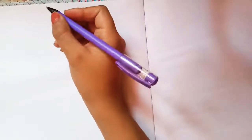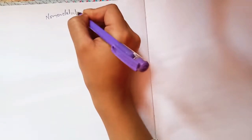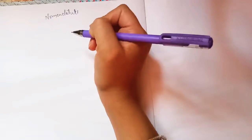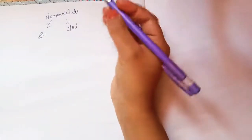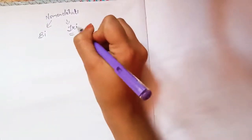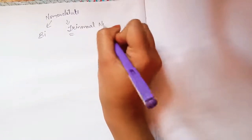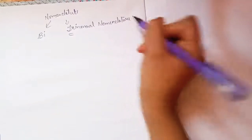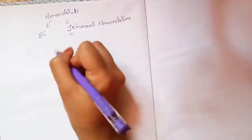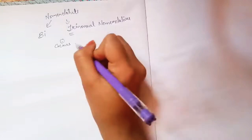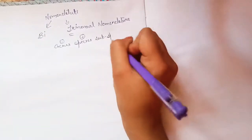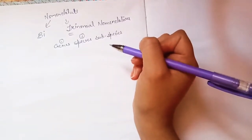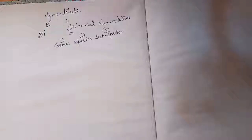Hello everyone, welcome back to the channel. In the previous video we discussed nomenclature, including binomial nomenclature and trinomial nomenclature. Let me revise trinomial nomenclature: in trinomial nomenclature, an organism is given a scientific name with three words. The first word represents the genus, the second represents the species, and the third represents the subspecies.